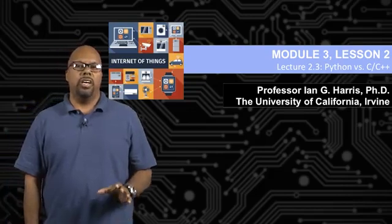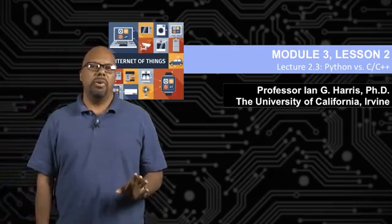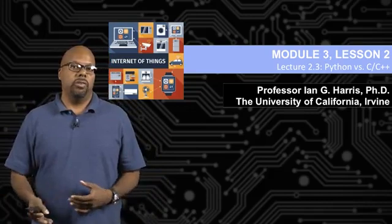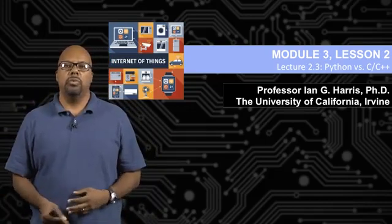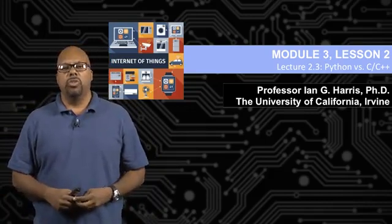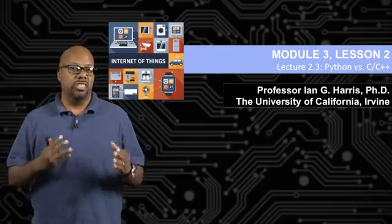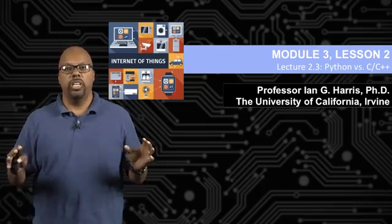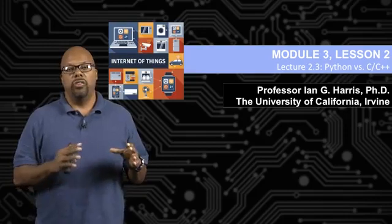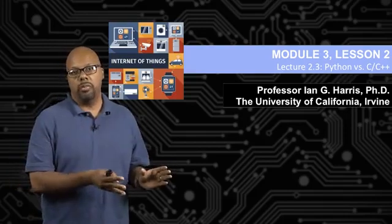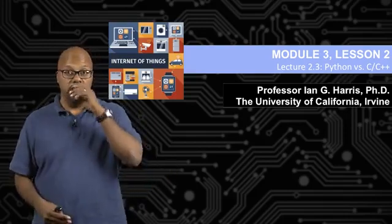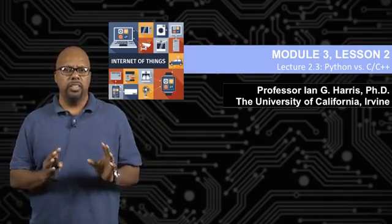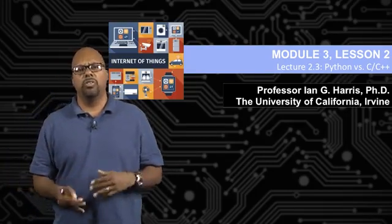This lecture will cover a comparison between Python and C and C++. Python is what we're going to be using with the Raspberry Pi, while C and C++ will be used with the Arduino. We'll also talk in more detail about the software tool chain — all the tools that go into taking a high-level piece of code and producing the eventual machine code — because the process looks a little different for one versus the other.